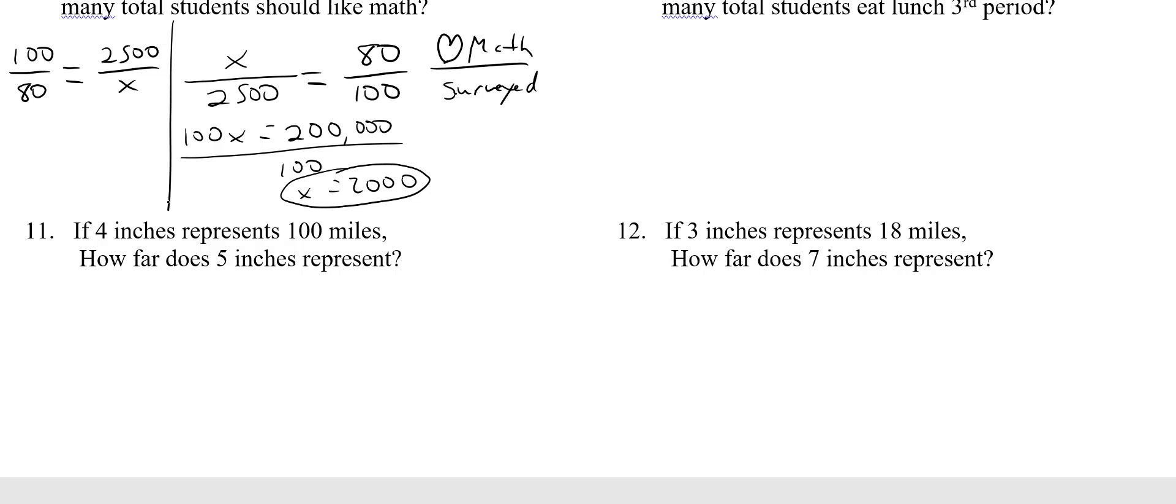Let's keep going. Number 11, 4 inches represents 100 miles. So I'm going to say 4 inches is 100 miles. Now it says how far does 5 inches. So put the same units on top. How many miles? So x miles. Same units on top and the bottom. So I cross multiply, you get 4x equals 500 divided by 4. So x comes out to be 125. So 4 inches is 100 miles, well 5 inches is supposed to be more. Sure is, it's 125 miles. And that's your answer.